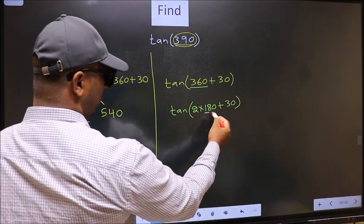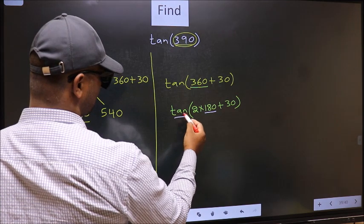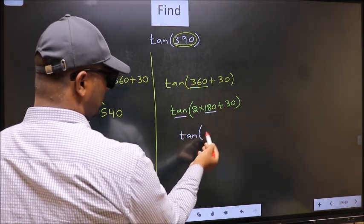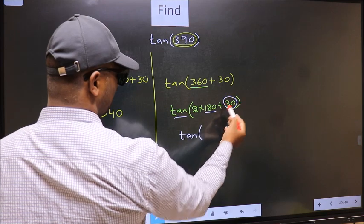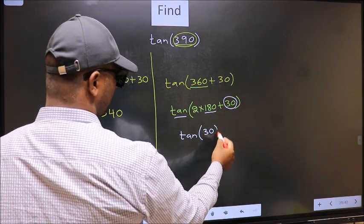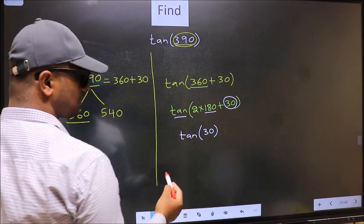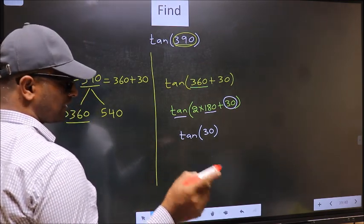Next here we have 180 so tan is not going to change, it will remain tan and inside we get this angle 30. Now the question is will we get here plus or minus?